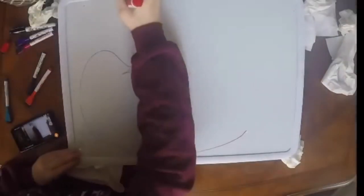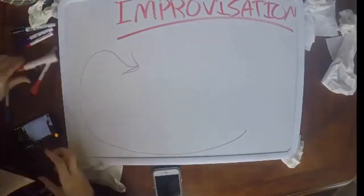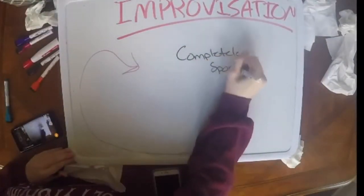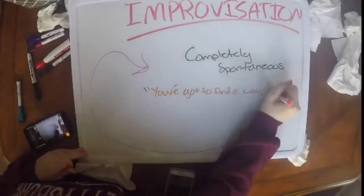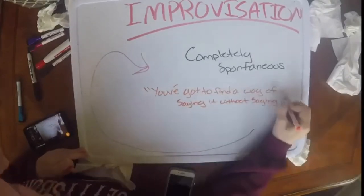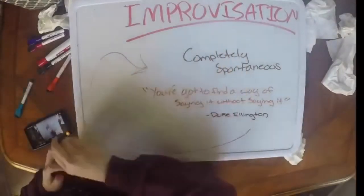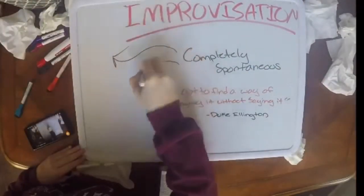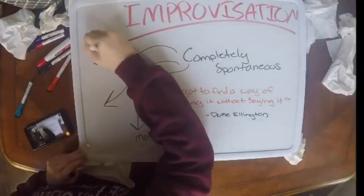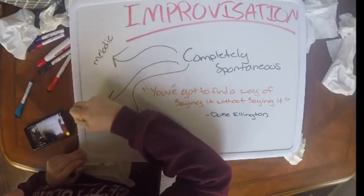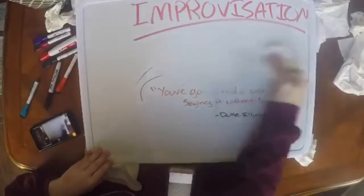Jazz improv is a style used more later on in history. It is the process of creating melodies spontaneously, without notes given to you on a sheet of music. The key to jazz improv is playing the music with creativity and intention. Duke Ellington once said, 'You've got to find some way of saying it without saying it.' There are three methods for jazz improvisation: melodic, harmonic, and motivic. Melodic solos are created in the moment, while motivic and harmonic solos are created using chord progressions and the melody of the song.